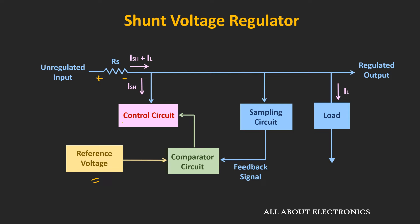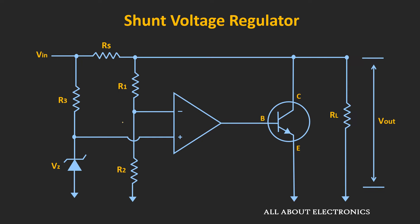There are many ways to design a voltage regulator, but in this video we will see how to design it using the op-amp. First, let's see the design of the shunt voltage regulator. Here Vin is the unregulated input voltage. The output voltage is sampled using a voltage-divider circuit, and the sampled voltage is given to the inverting terminal of the op-amp. The Zener diode provides the fixed reference voltage, which is given to the non-inverting terminal. Il is the load current and Ic is the collector current, or shunt current. Neglecting current through the voltage-divider, the current through RS equals Il plus Ic.